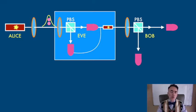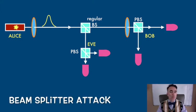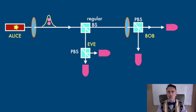But there is more to this. Imagine Eve doesn't measure the photons directly but instead places a beam splitter in the way. This is called the beam splitter attack.